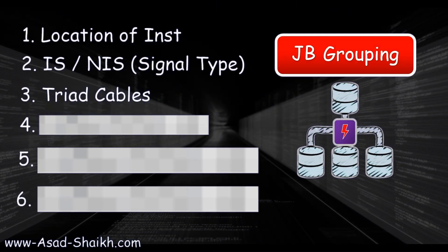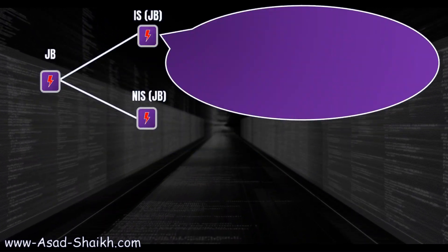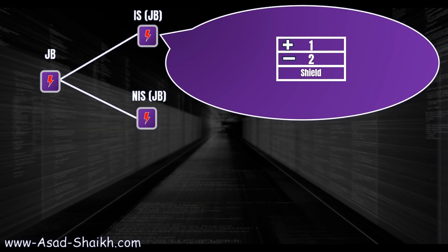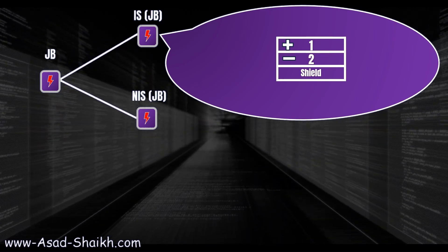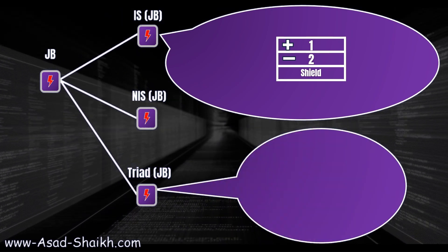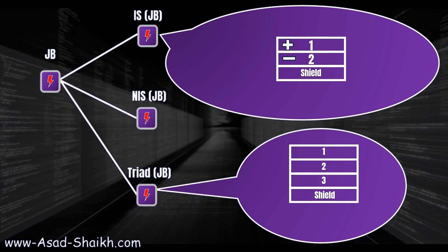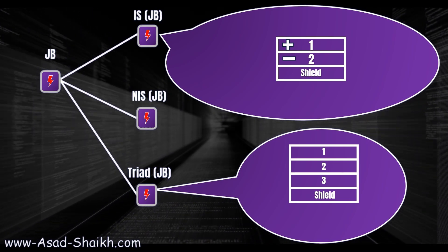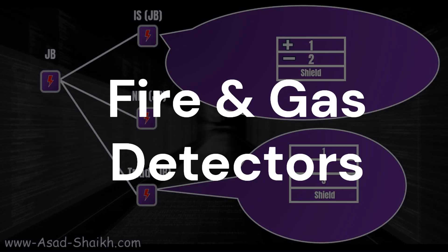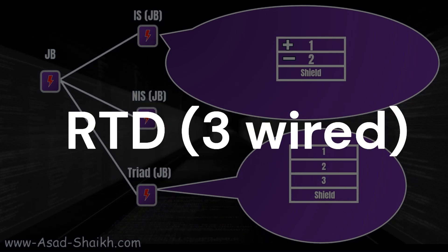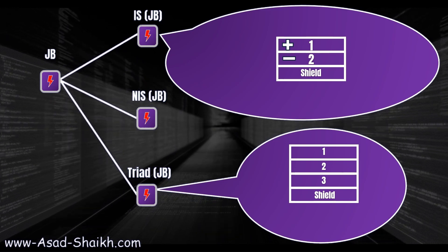The third important criteria is triad cables. For a standard IS JB you have two terminals — positive, negative, and shield. But for a triad cable the connection is different: you have three wires plus a shield. For this reason it is sometimes preferred to have a separate triad cable JB. Common examples of triad cable devices include fire and gas detectors and RTDs.